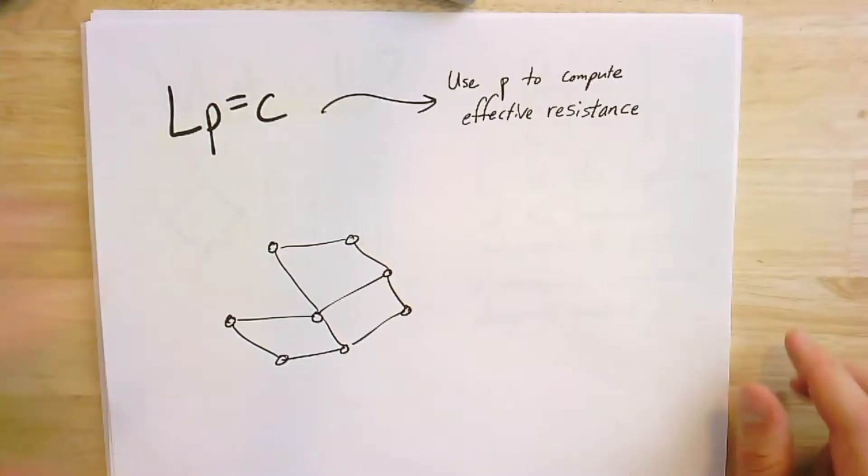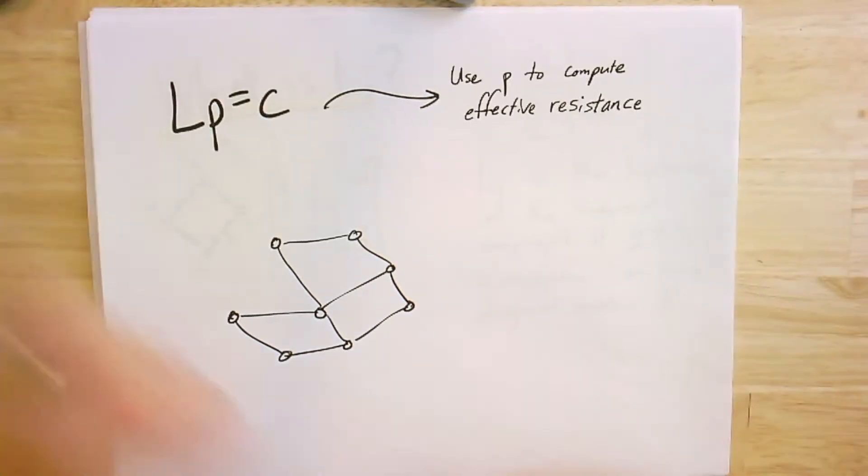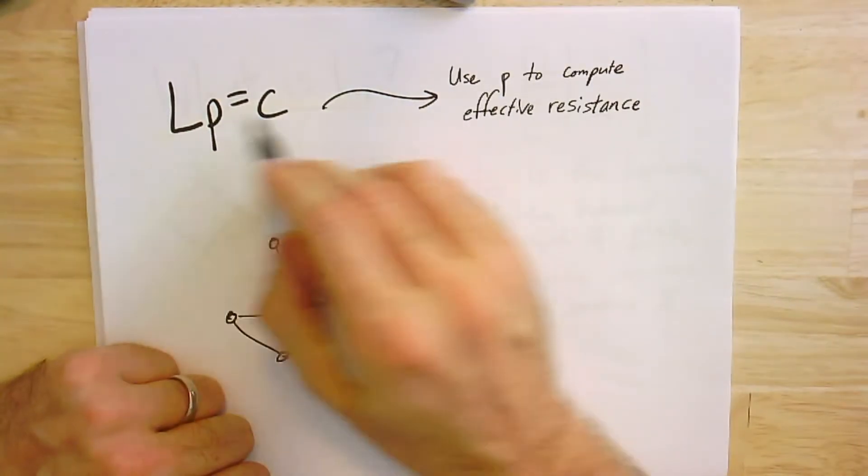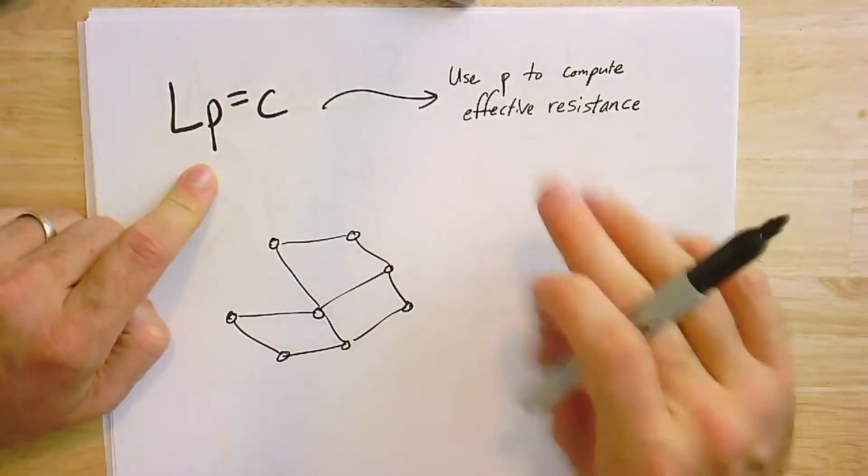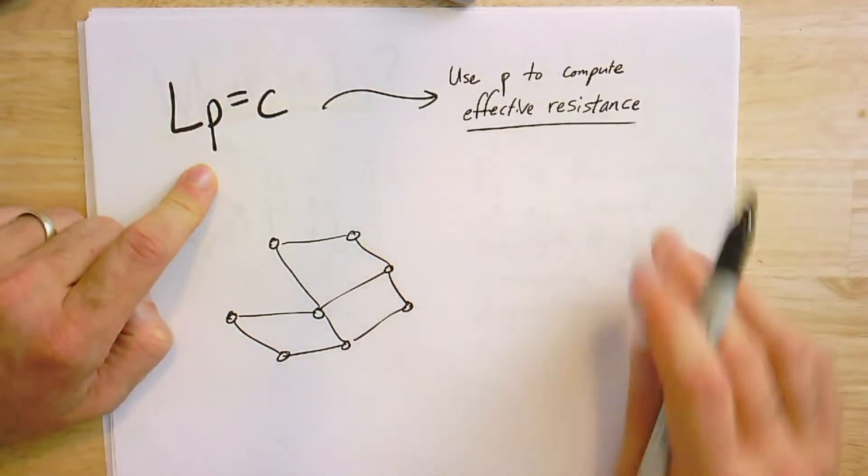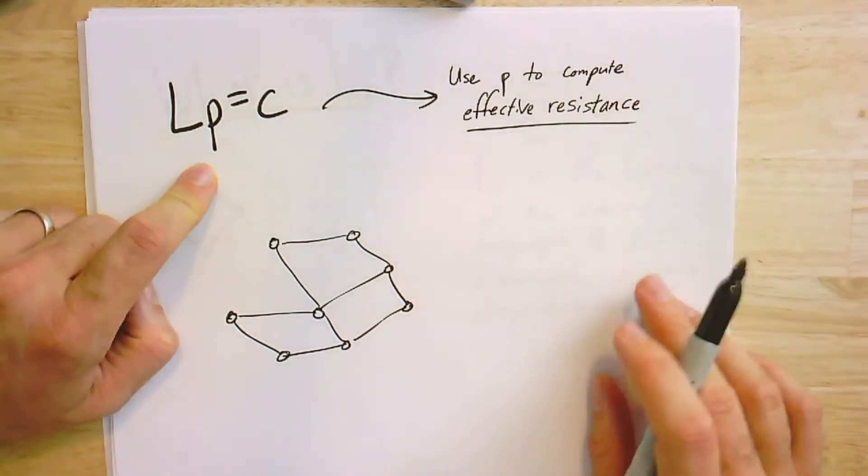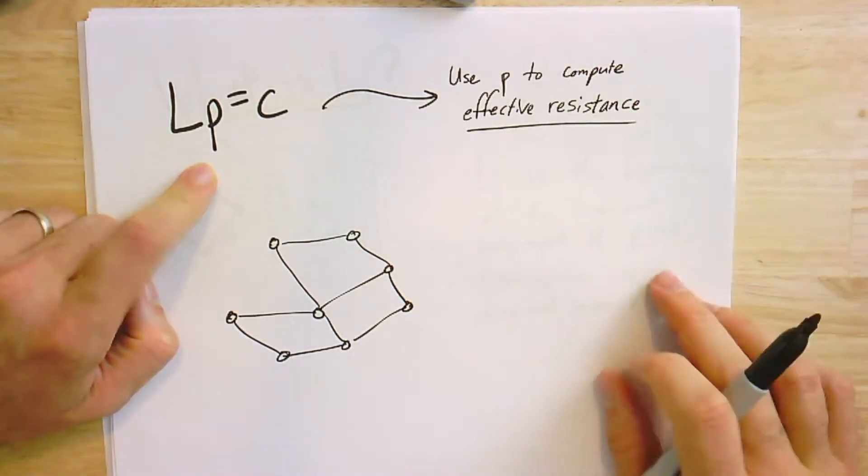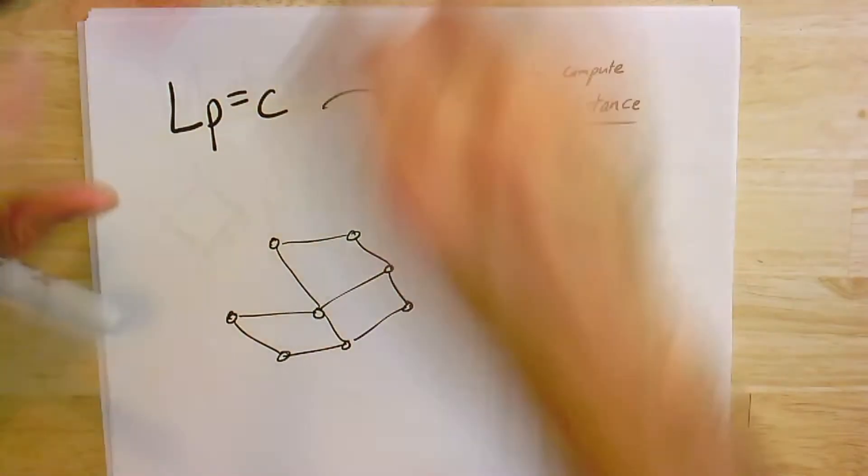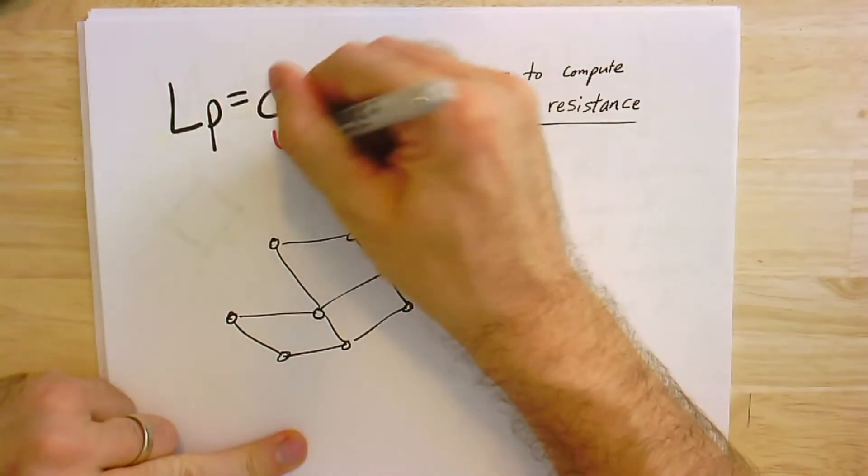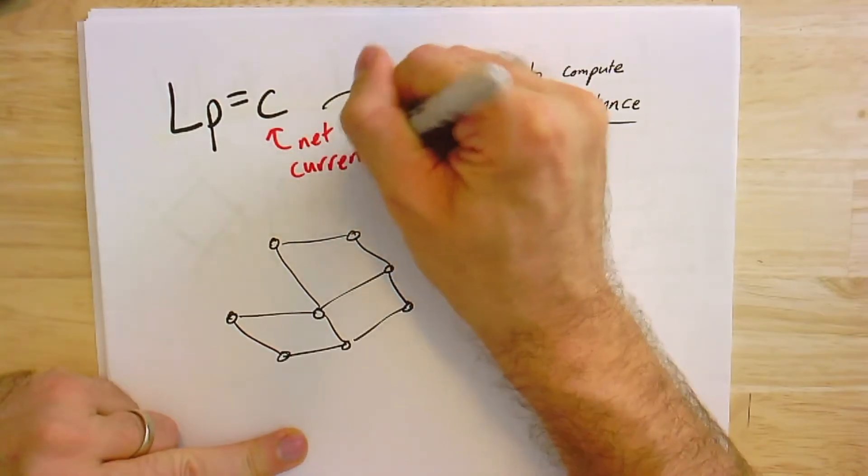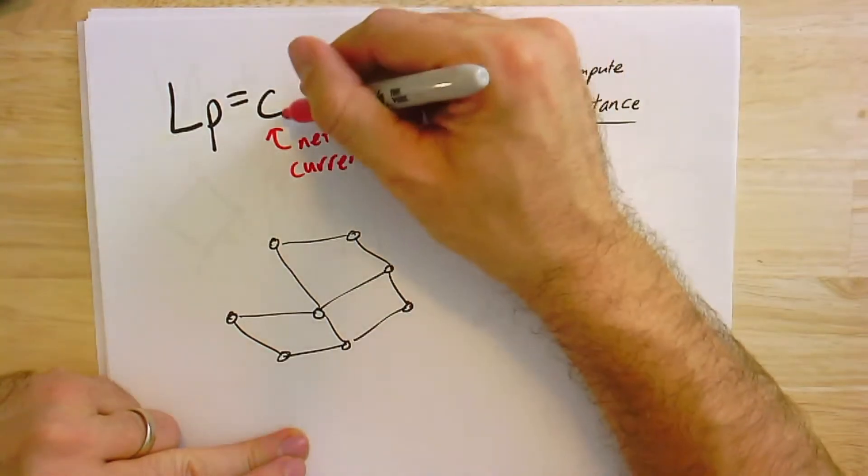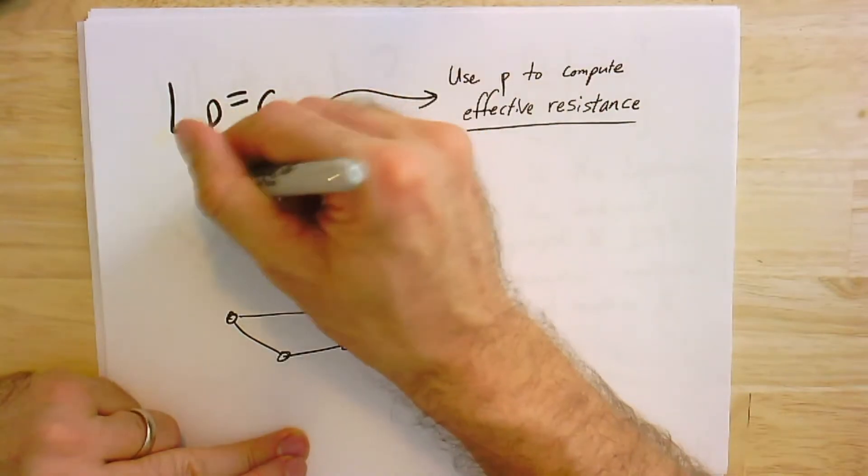Remember we had this Laplacian system where we took a known current and we solved for a potential. From that potential, we were able to do things like computing effective resistances, which is quite important in its own right. But let me remind us that this is the net current, so it's not a current on the edges, it's a net current at each vertex, and this is a potential, not a potential difference or voltage.